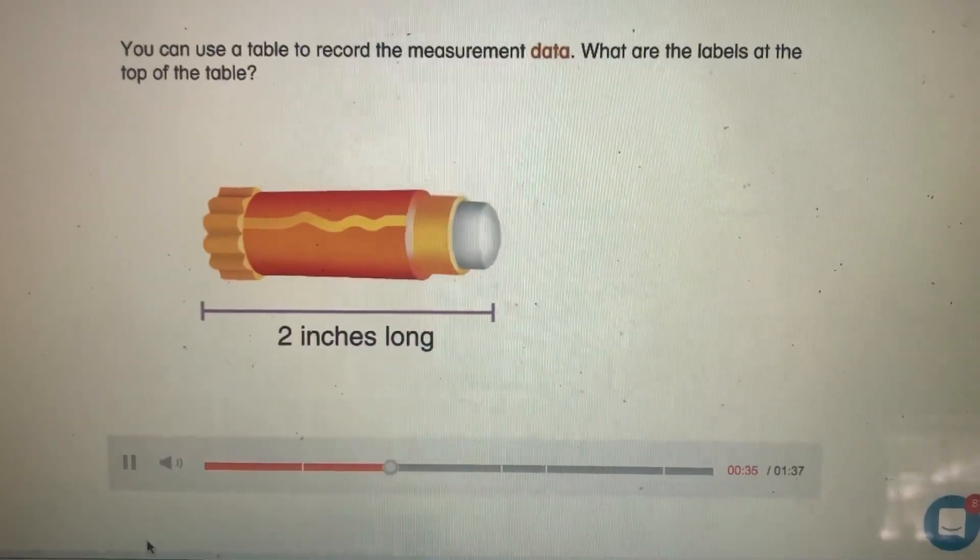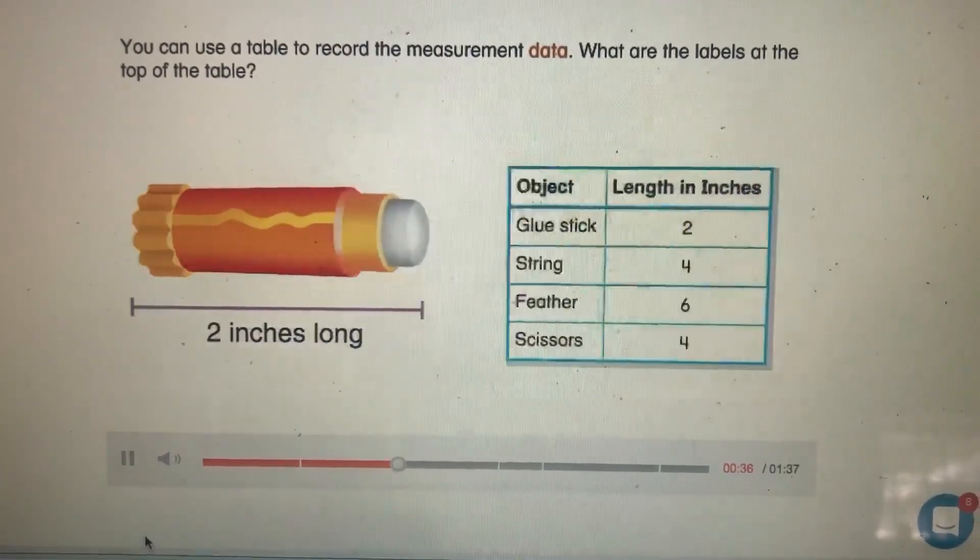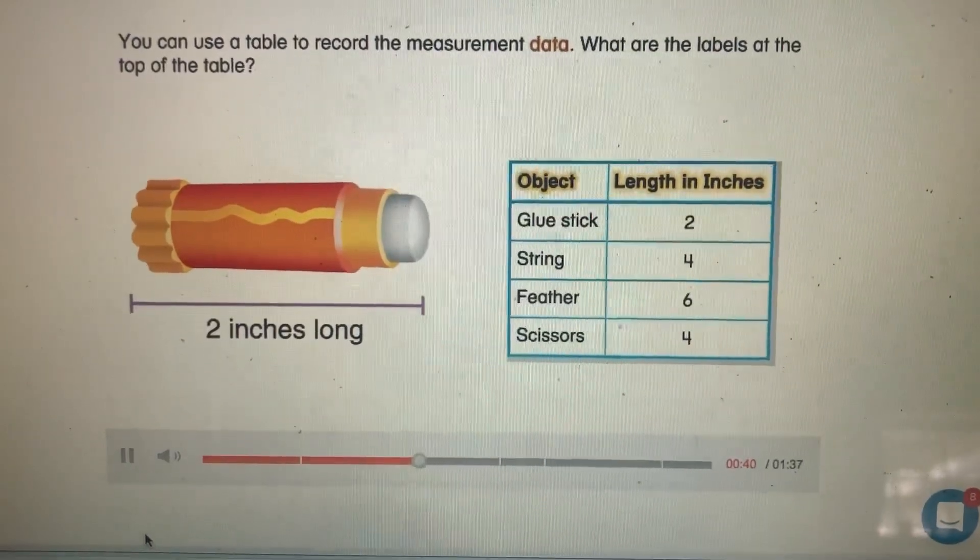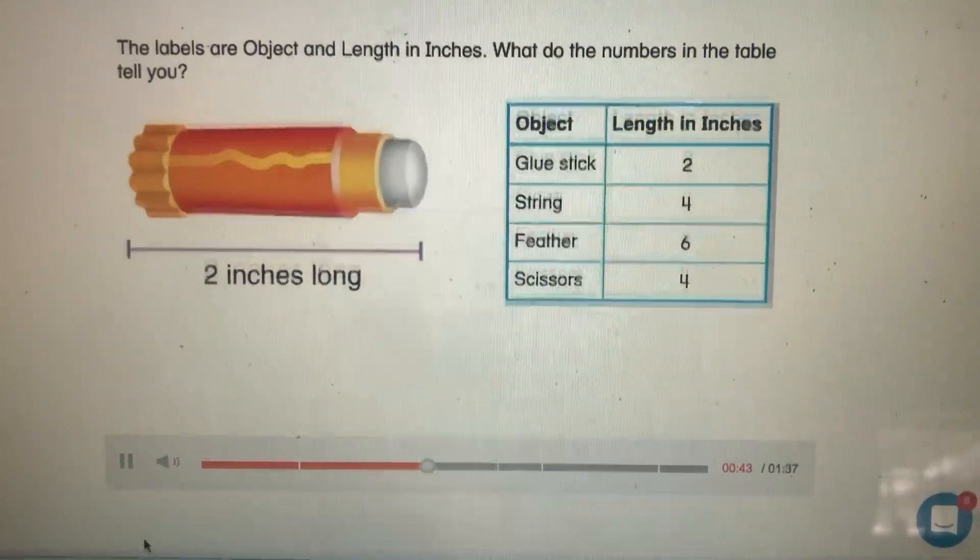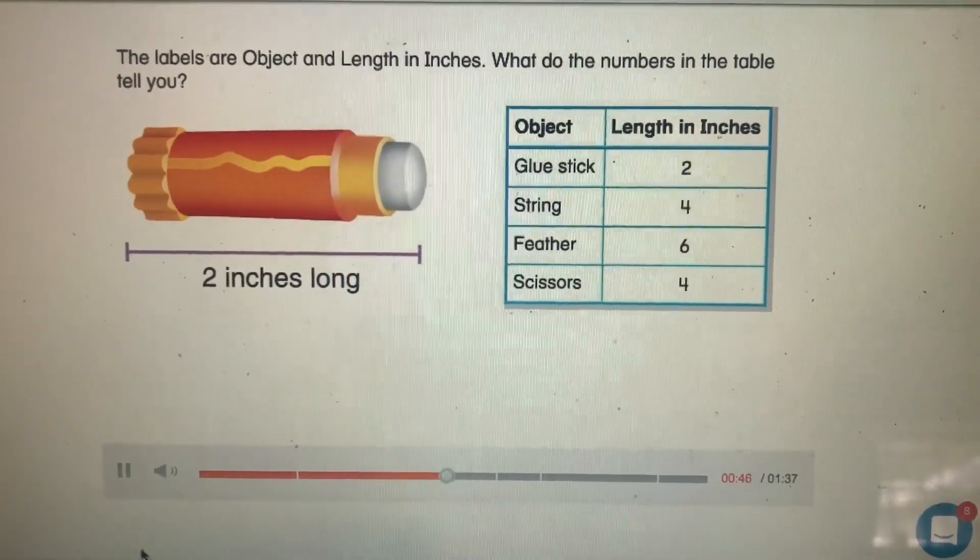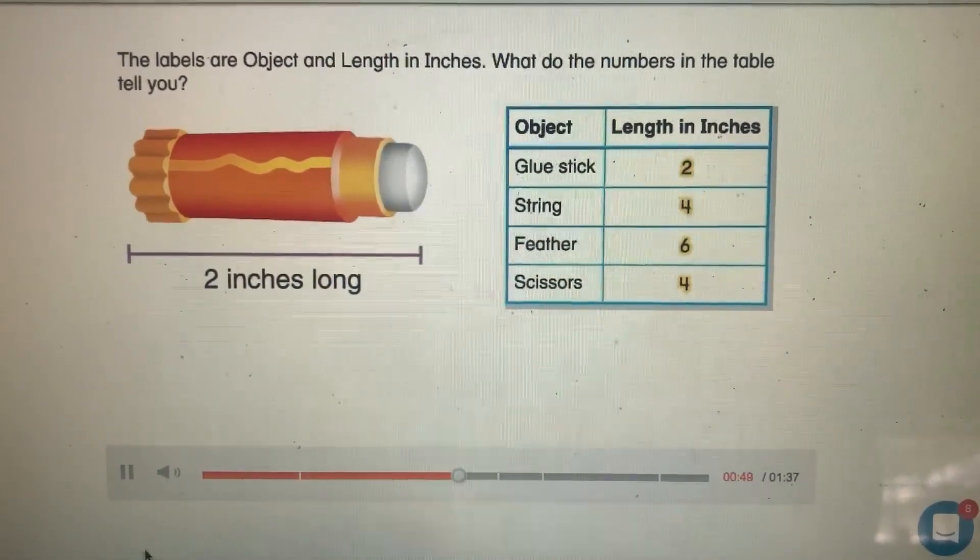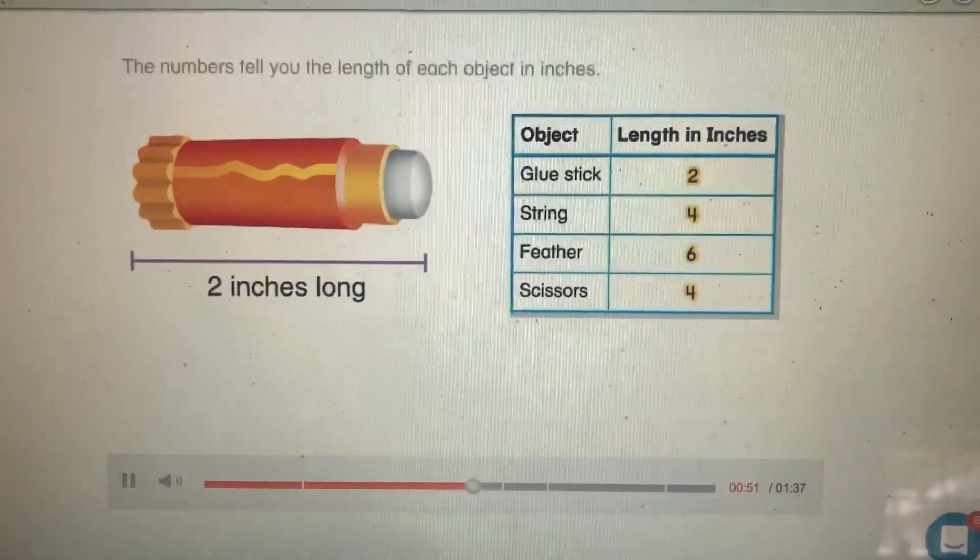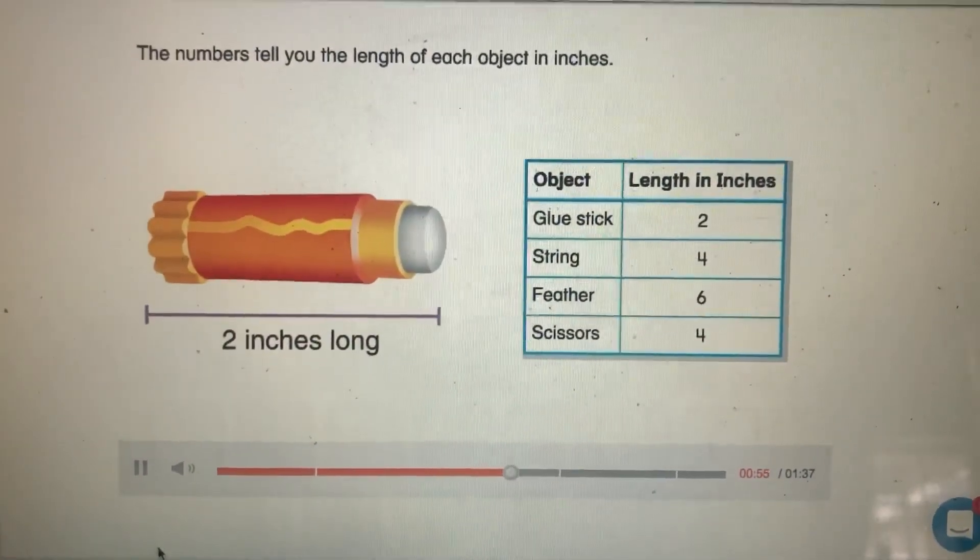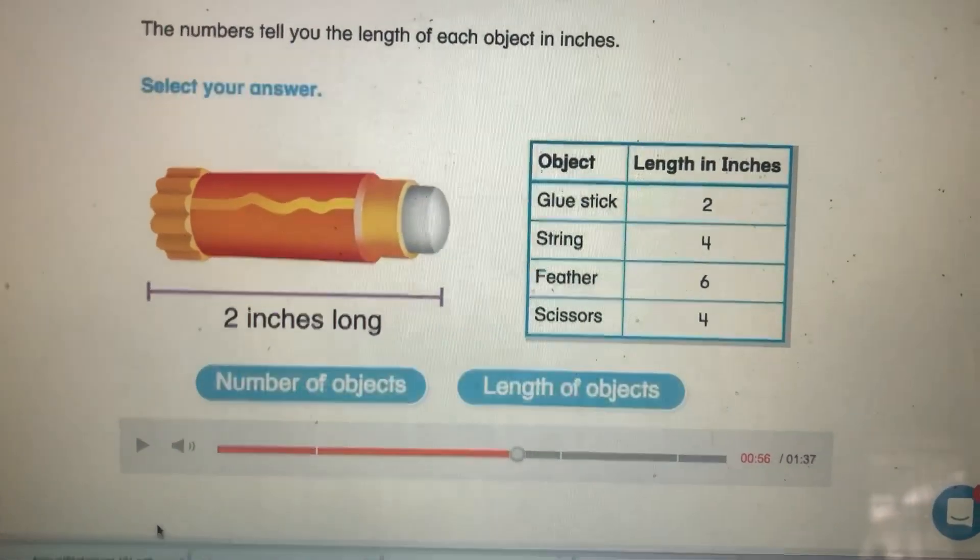You can use a table to record the measurement data. What are the labels at the top of the table? The labels are object and length in inches. What do the numbers in the table tell you? The numbers tell you the length of each object in inches. Select your answer.